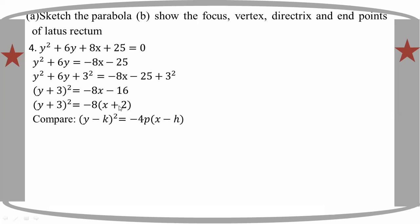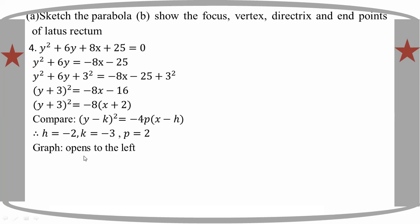When you compare: y minus k becomes y minus negative 3, so k is minus 3. Then h is minus 2. The sign tells us x, q: minus 2, minus 3.